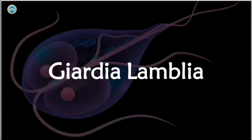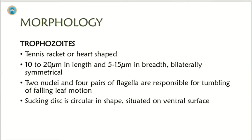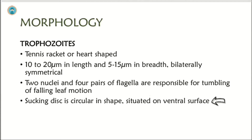Let's get into the video. Morphology: First, I'll tell you about trophozoites and then we'll talk about cysts. Trophozoites are tennis racket or heart-shaped. They vary from 10 to 20 micrometers in length and 5 to 15 micrometers in breadth. They are bilaterally symmetrical and two nuclei are present. Four pairs of flagella are responsible for tumbling or falling leaf motion. The sucking disc is circular and situated on the ventral surface of the parasite. It helps in its attachment to the bowel wall or intestinal wall for invasion.